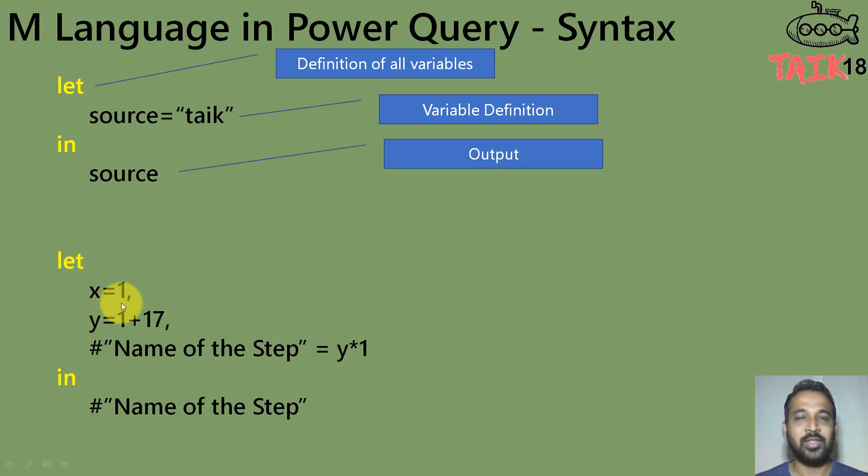And whatever this steps are the variable which you are passing it here is going to be the output of it. So let's understand with another example. So I'm using is let x equal to one and comma, comma represent that is end of the line. So the next you'll be the next line or next step. So y equal to one plus 17 and it gives a 18 result.